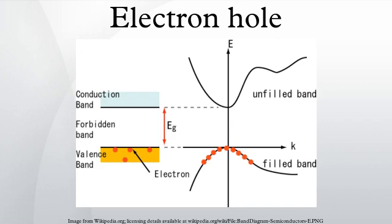The electron hole was introduced into calculations for the following situations: if an electron is excited into a higher state, it leaves a hole in its old state. This meaning is used in Auger electron spectroscopy, in computational chemistry, and to explain the low electron-electron scattering rate in crystals. In crystals, electronic band structure calculations led to an effective mass for the electrons, which typically is negative at the top of a band. The negative mass is an unintuitive concept, and in these situations a more familiar picture is found by considering a positive charge with a positive mass.